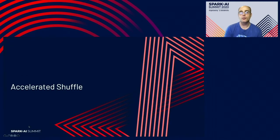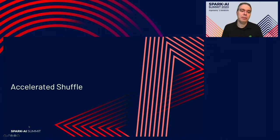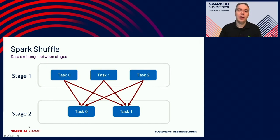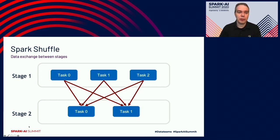Now I'm going to talk about accelerated shuffle and what that means when processing on GPUs. When we say shuffle, we're referring to the data exchange between Spark stages. Here's an example showing two stages in a Spark job: the first stage has a parallelism of three, represented by tasks 0, 1, and 2; the second stage has a parallelism of two. As stage one runs, every task partitions its output into two partitions reflecting the parallelism of the next stage. When that stage completes, we transfer or shuffle all those partitions to the respective tasks in the subsequent stage — that transfer is the shuffle.